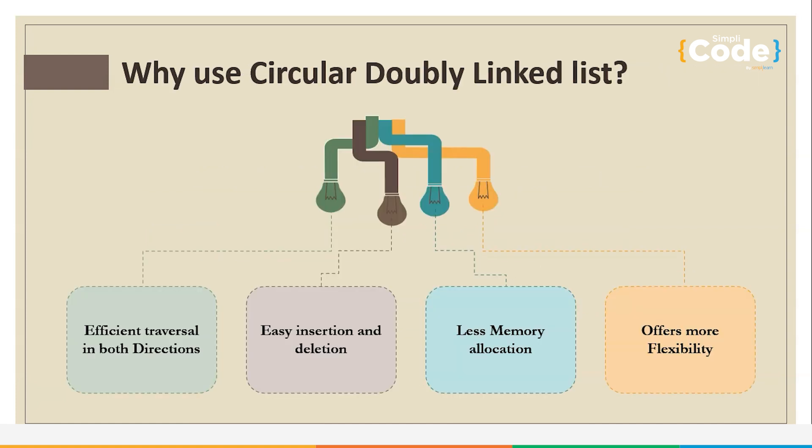Now comes the main question. We also have doubly linked lists, singly linked lists, and circular linked lists. But why do we need circular doubly linked lists? One of the advantages is it allows for efficient traversal in both directions as well as constant time access to both the first and the last node.